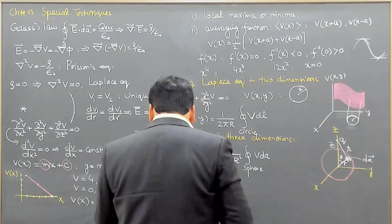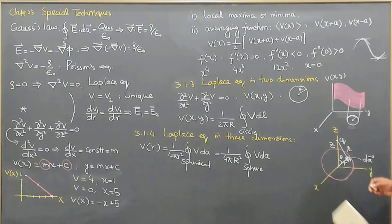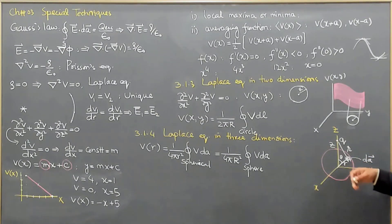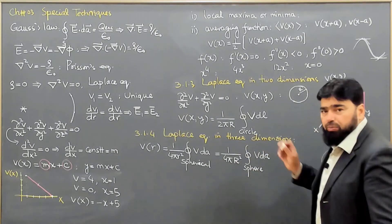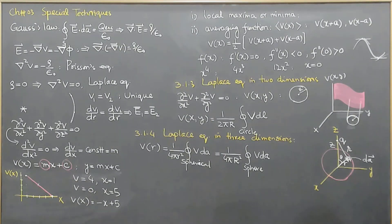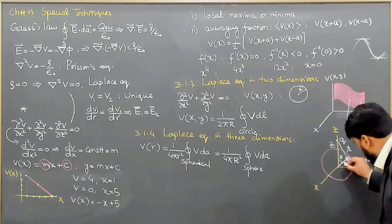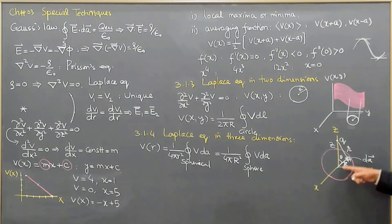We are calculating the average potential over a spherical surface of radius R. When integrating, r is fixed (no dr), and we integrate over θ and φ, so capital R appears. We are finding the average potential on the surface of the sphere due to a single point charge.